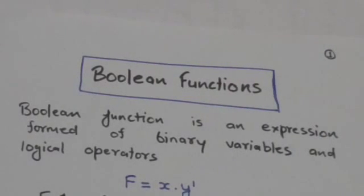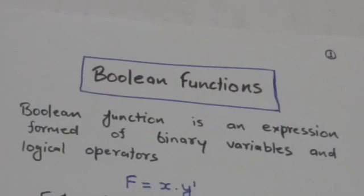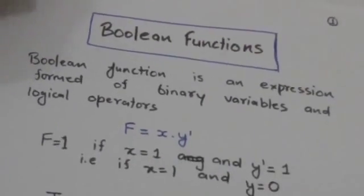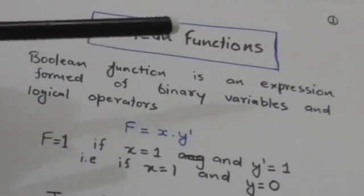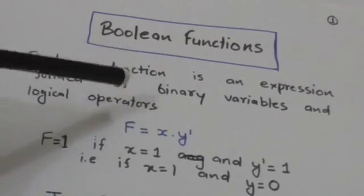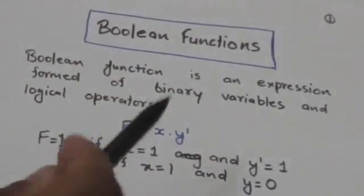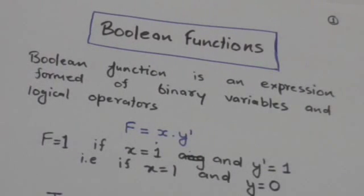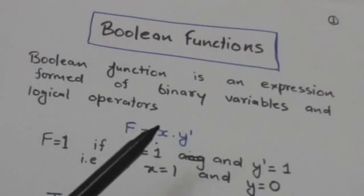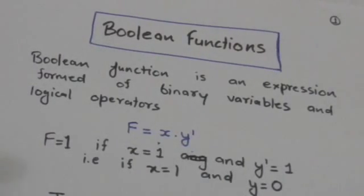Hello friends, welcome back to tutorials. In this tutorial we will study about Boolean functions. A Boolean function is an expression formed of binary variables and logical operators. For example, here there is a function f which is equal to x AND y-naught. The value of f will be 1 if x equals 1 and y-naught equals 1. Y-naught equals 1 when y equals 0, so f equals 1 when x equals 1 and y equals 0.